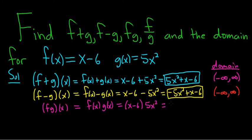that's going to multiply to 5x cubed. And then 5x squared times negative 6, that's going to be minus 30x squared. And so that would be the answer for f times g of x.